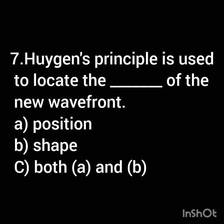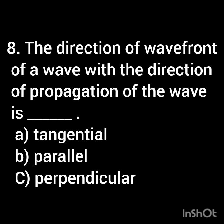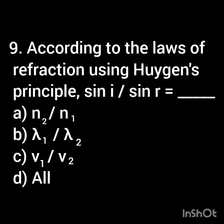Huygens' principle is used to locate the [blank] of the new wavefront. The direction of the wavefront of a wave with the direction of propagation of the wave is [blank]. According to the law of refraction using Huygens' principle, sin i divided by sin r is equal to [blank].